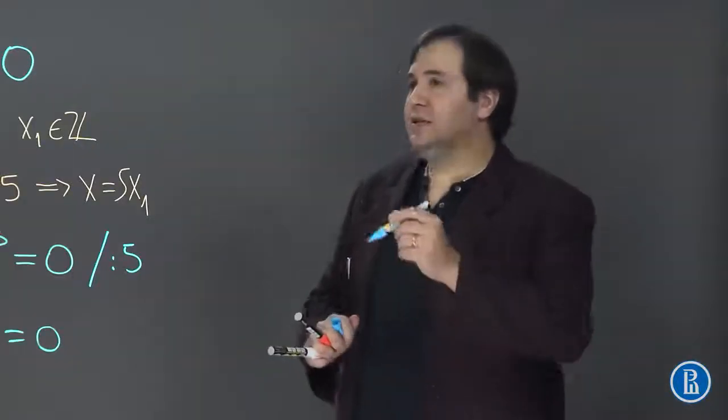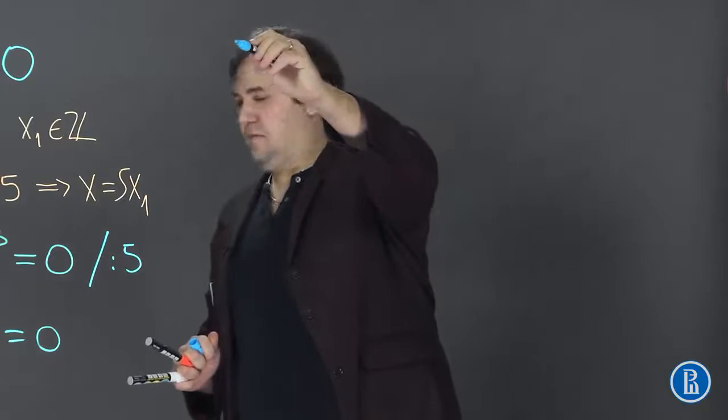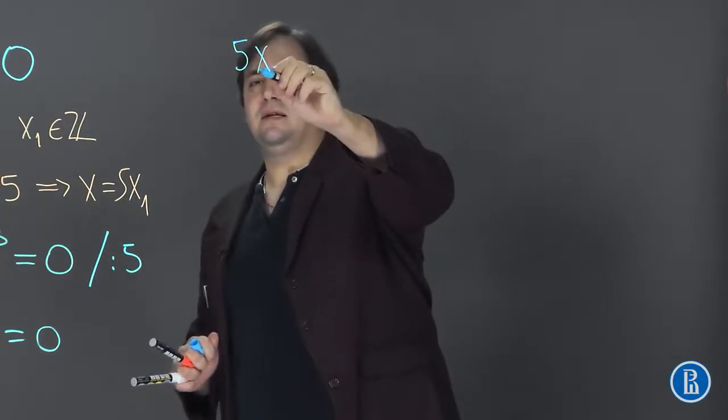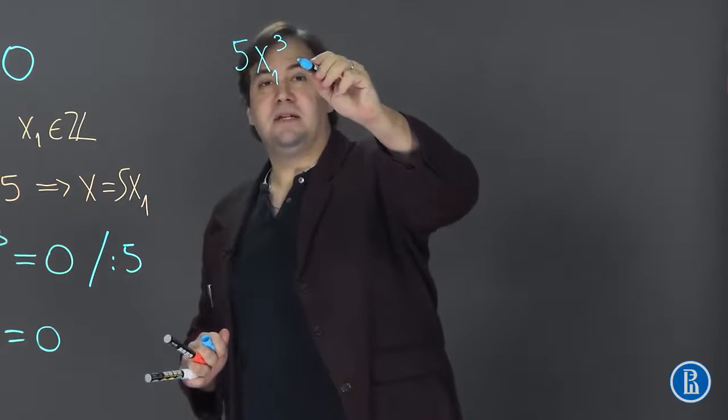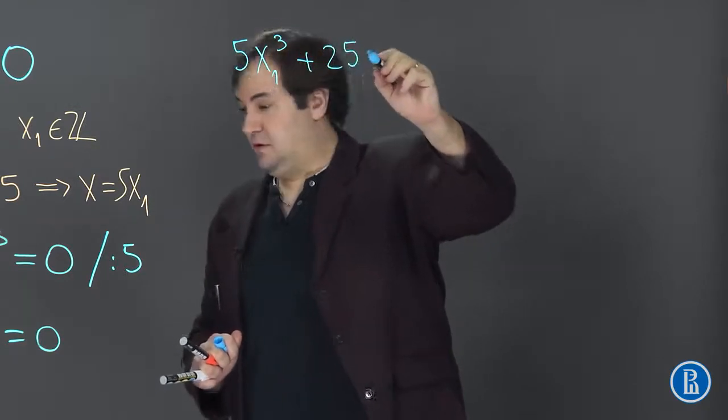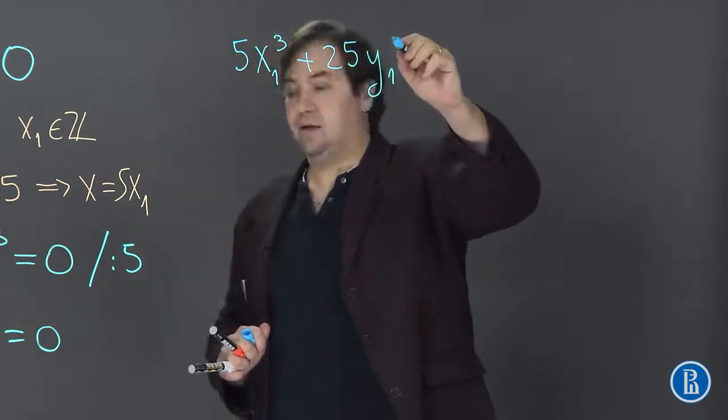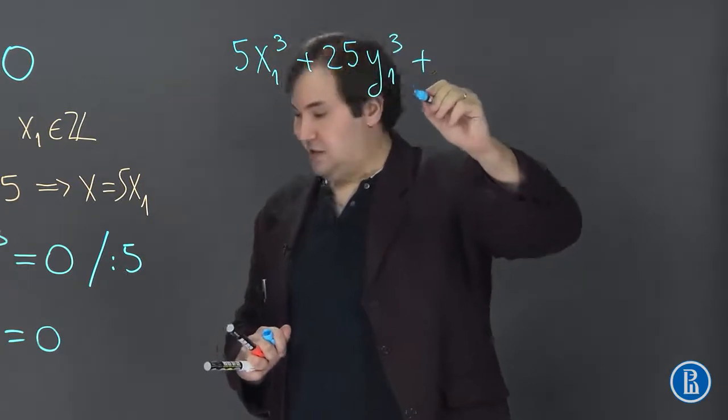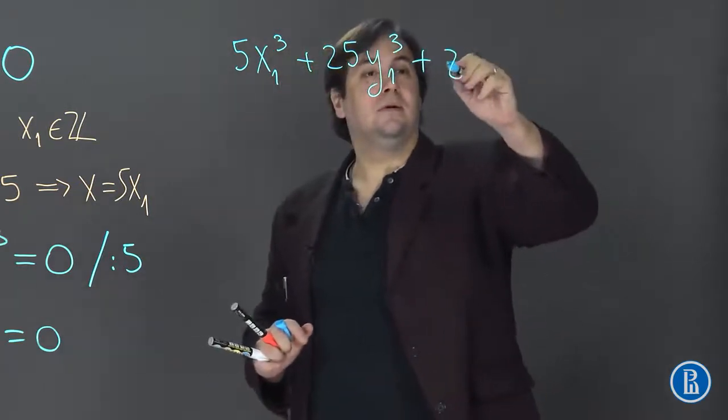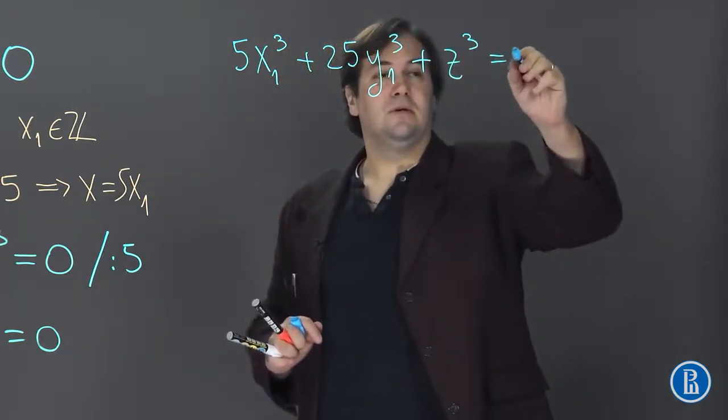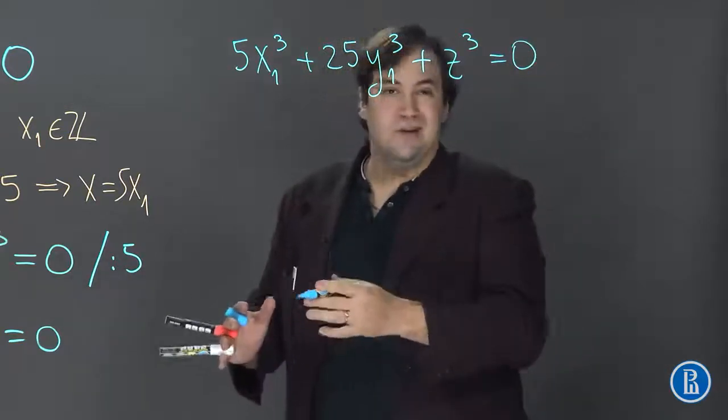So the new equation is 5x₁³ plus 25y₁³ plus z³ and this should be equal to 0 because 0 divided by 5 is 0.